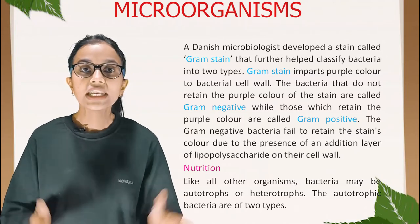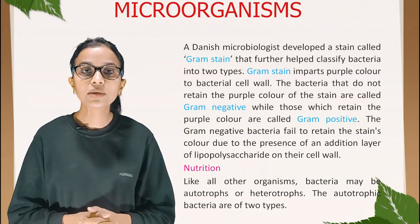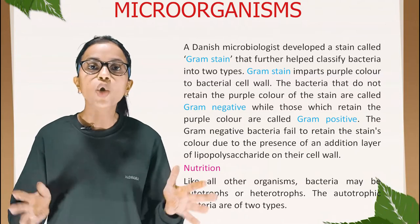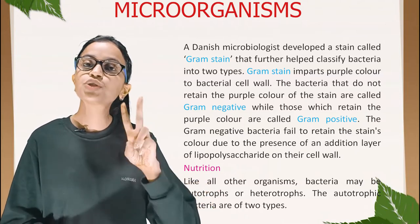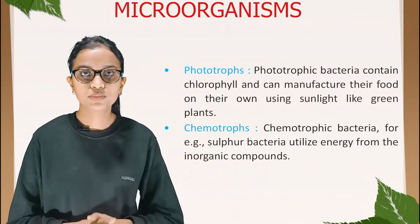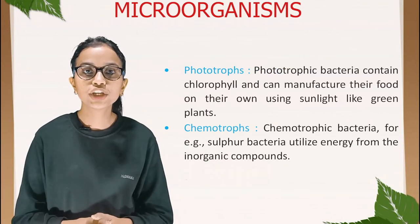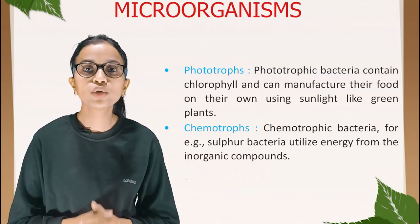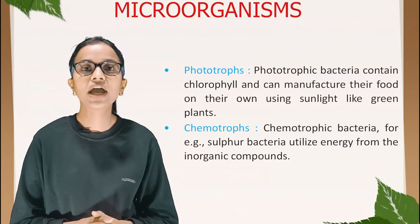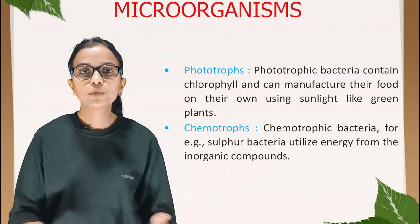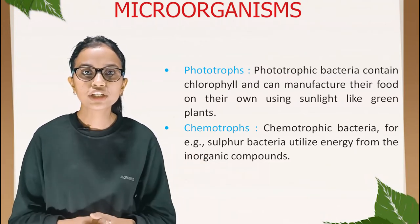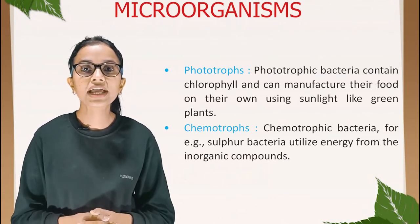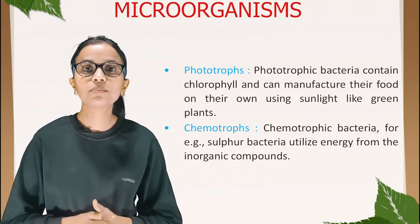Nutrition: like all other organisms, bacteria may be autotrophs or heterotrophs. Autotrophic bacteria are of two types. Phototrophic bacteria contain chlorophyll and can manufacture their own food using sunlight, like green plants. Chemotrophic bacteria — for example, sulfur bacteria — utilize energy from inorganic compounds.